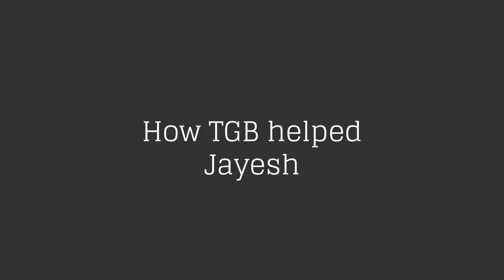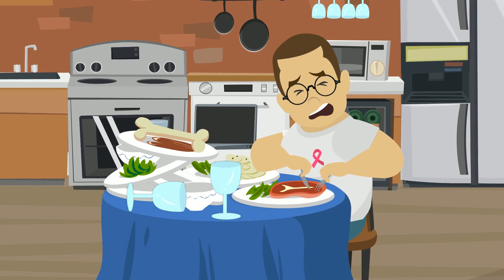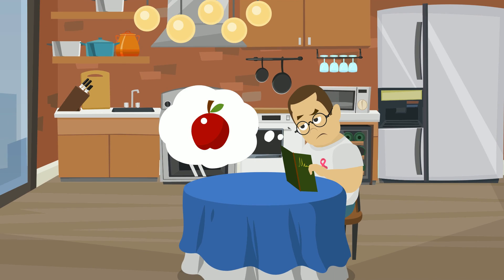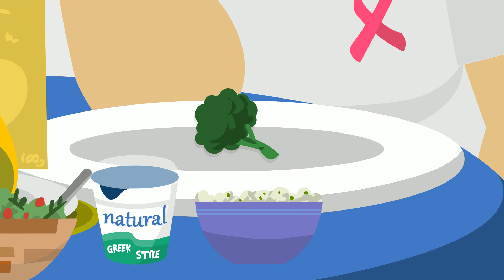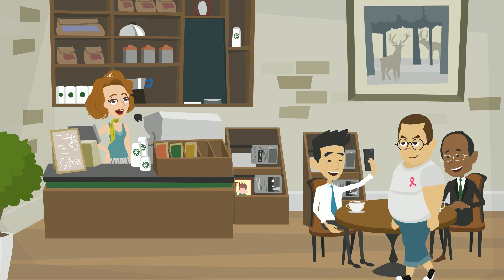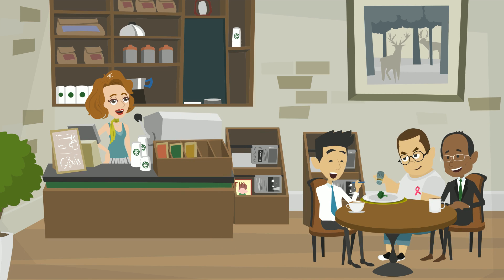How TGB helped Jayesh. Jayesh overeats because of his delayed feeling of fullness thanks to his FTO gene. TGB helped him shift to a fiber and protein-rich diet of whole grains, millets, fruits, green leafy veggies, cereal-legume combo meals, nuts, yogurt, salads, and sprouts. He was advised to eat meals of smaller portions and defined quantities. Slowly but steadily, he's learning the virtues of mindful eating.